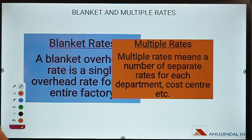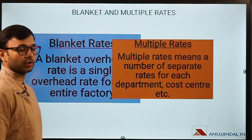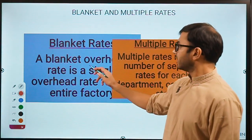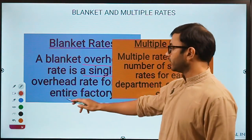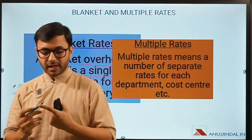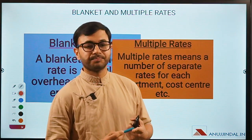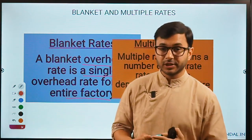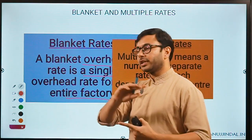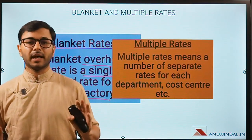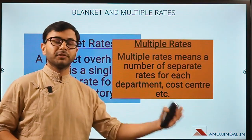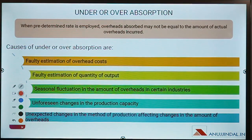Blanket rate vs multiple rates: a blanket overhead rate is a single overhead rate used for the entire factory. In our first example we had multiple rates — floor area for rent, value of machinery for depreciation — those are multiple rates, with different rates used for different departments and different expenses. A blanket rate would use only one rate for all overheads across the entire operation.